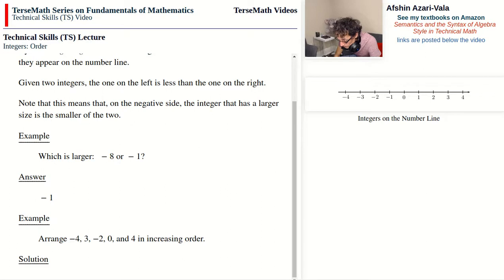So the answer is negative 4, negative 2, 0, 3, 4.